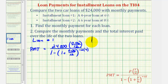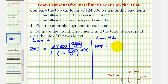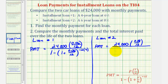Now let's set this up for loan two. The only difference is that T is six because it's a six-year loan, and R is eight percent or 0.08. The payment will equal 24,000 times 0.08 divided by 12, and then for the denominator we have one minus one plus 0.08 divided by 12, raised to the power of negative N times T, or negative 12. This is a six-year loan, so T is six.